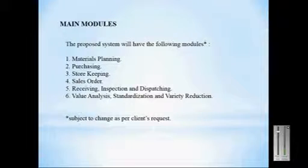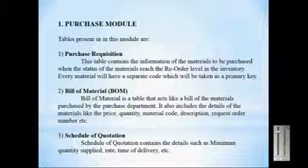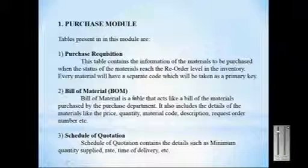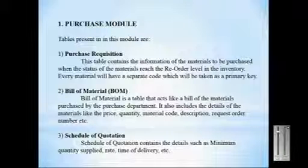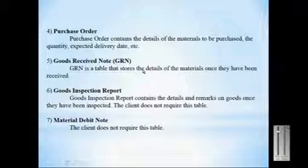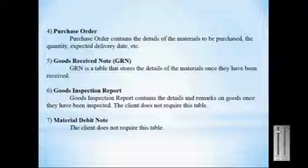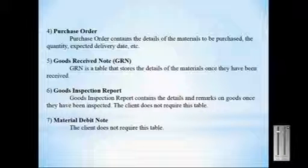The purchase module consists of the following tables. The two main tables are bill of materials and goods received note. Once the client receives materials from the vendor, the company generates a goods received note stating the amount and quantity of the material, with status marked as received successfully.